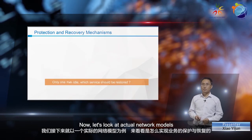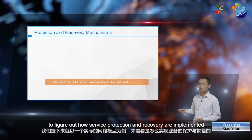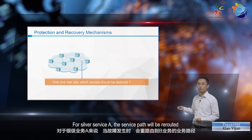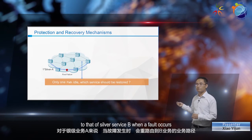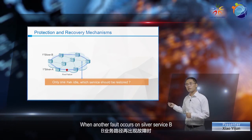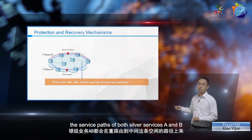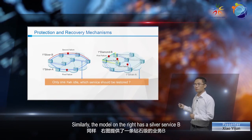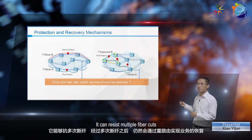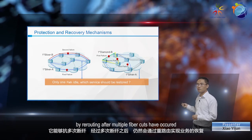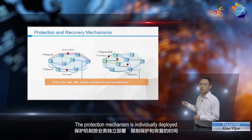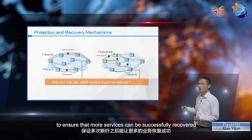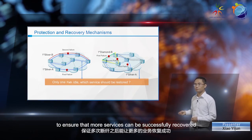Now let's look at actual network models to figure out how service protection and recovery are implemented. Here are two models. The model on the left has two silver services. For silver service A, the service path will be rerouted to that of silver service B when a fault occurs. When another fault occurs on silver service B, the service paths of both silver services A and B will be rerouted to the idle path in the middle. Similarly, the model on the right has a silver service B. It can resist multiple fiber cuts, and its services can still be restored by rerouting after multiple fiber cuts have occurred. The protection mechanism is individually deployed for each service with restricted protection and recovery time to ensure that more services can be successfully recovered after multiple fiber cuts.